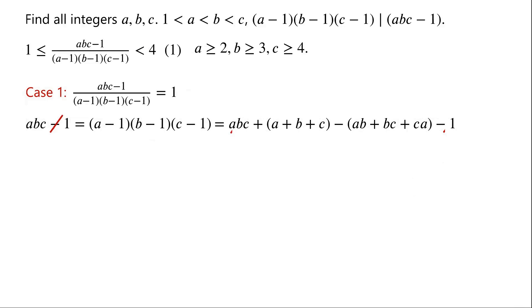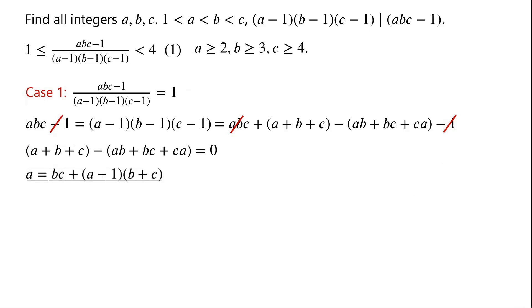The abc - 1 terms on both sides cancel. So a + b + c - (ab + bc + ca) = 0. By rearranging, we can write a = bc + (a-1)(b+c).